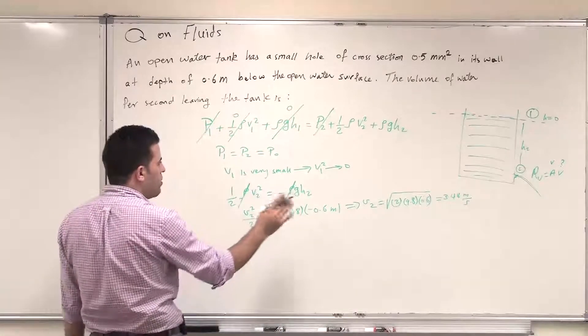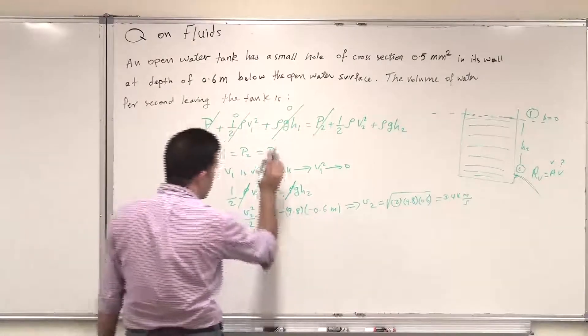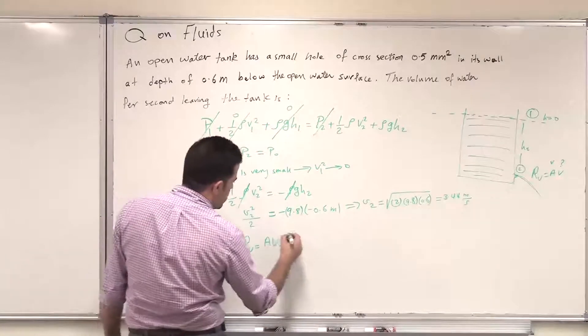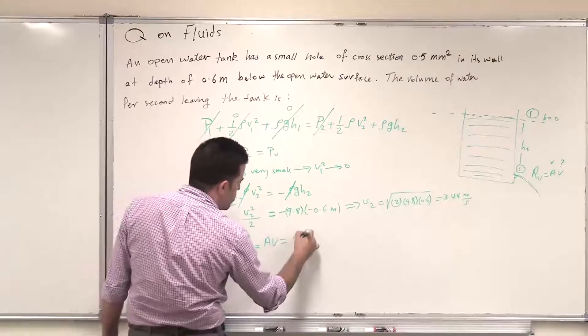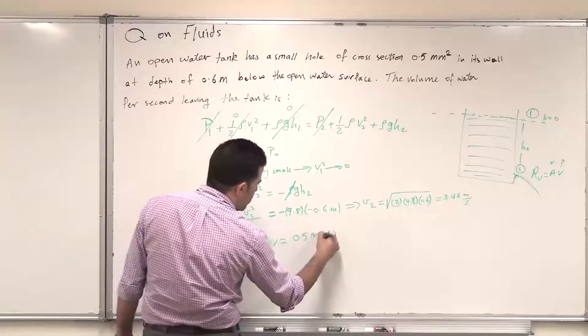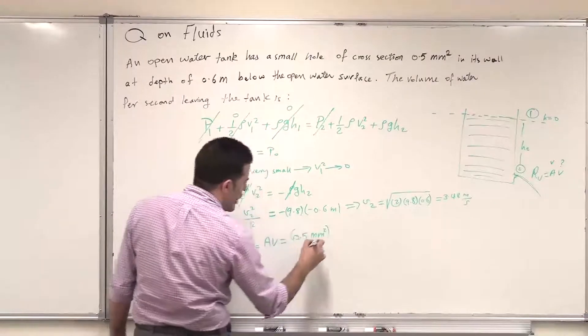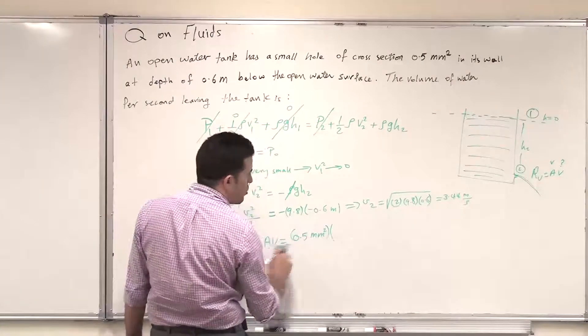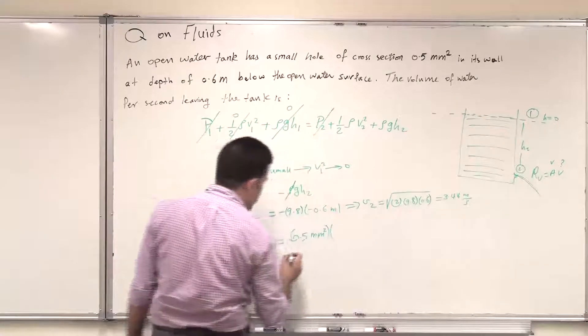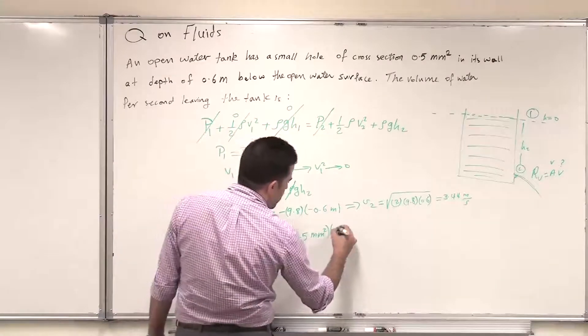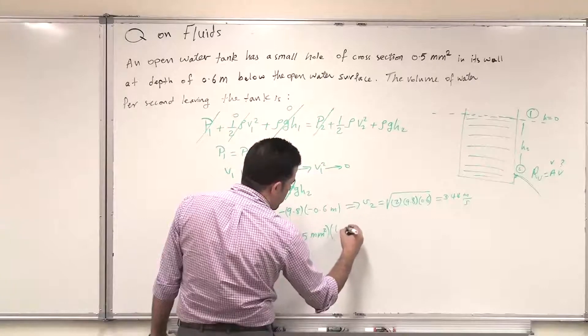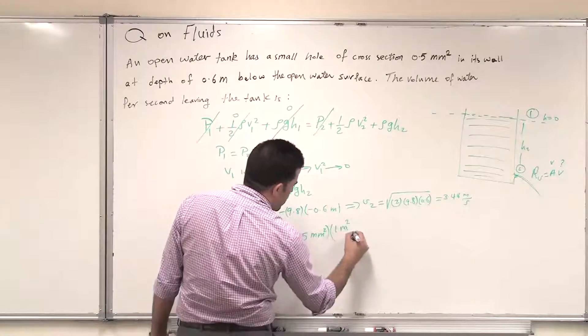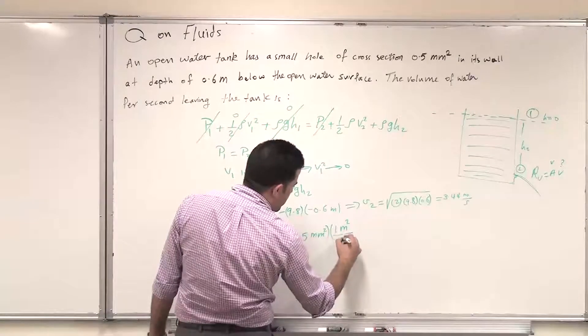Now I can use this information to find the volume flow rate Rv which is Av so it is the cross section of the hole is 0.5 millimeter squared and then I need to multiply it by the conversion factor because I'm reporting the velocity in meters per second. So 1 millimeter squared is 10 to the power minus 6 meter squared.